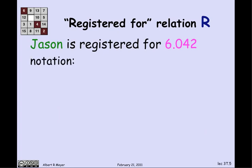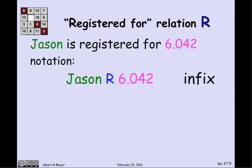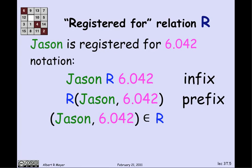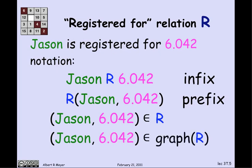There are a bunch of notations used with binary relations. One way is infix notation: Jason R 6042. Another is prefix notation: R(Jason, 6042). More formally, you can say the ordered pair (Jason, 6042) is a member of the relation — or, to be really precise, a member of the graph of the relation. I'll elaborate on what the graph of a relation and ordered pairs mean shortly.